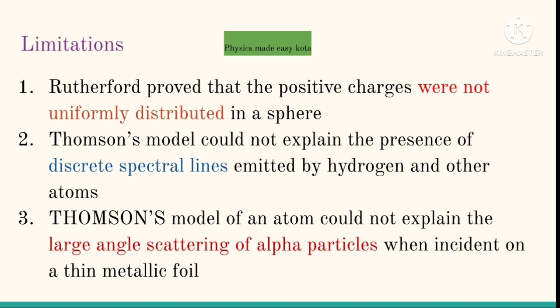Thomson model could not explain the presence of discrete spectral lines emitted by hydrogen and other atoms. Also, this model could not explain the large angle scattering of alpha particles when incident on a thin metallic foil, such as a gold foil. Hence, efforts were made to look for a better model of atom.